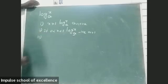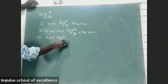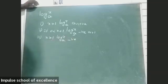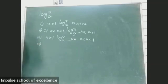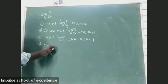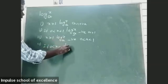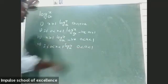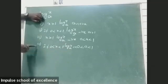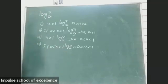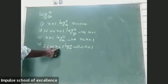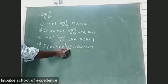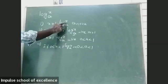The third condition: if x is greater than 1, then log X base A is a negative value when 0 is less than A is less than 1. The fourth condition: if 0 is less than x is less than 1, then log X base A is a positive value when 0 is less than A is less than 1.